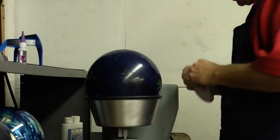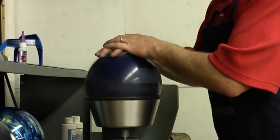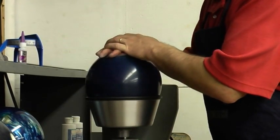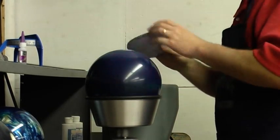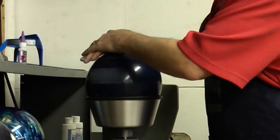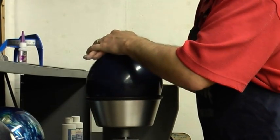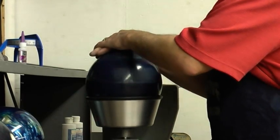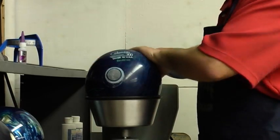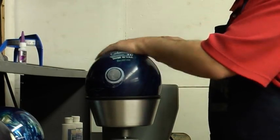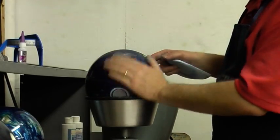Then we'll start with an abralon pad, turn on the ball spinner. That came out pretty nice. What I'm looking for is to make sure I have all the glue and cut off of it, so that's good.